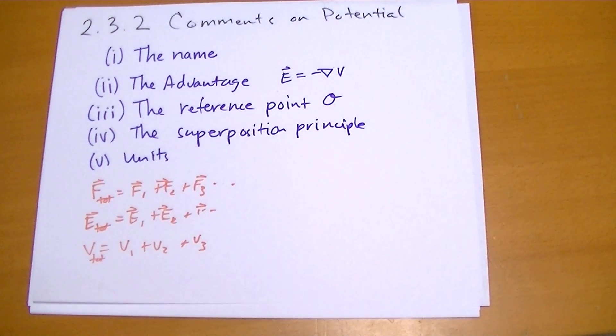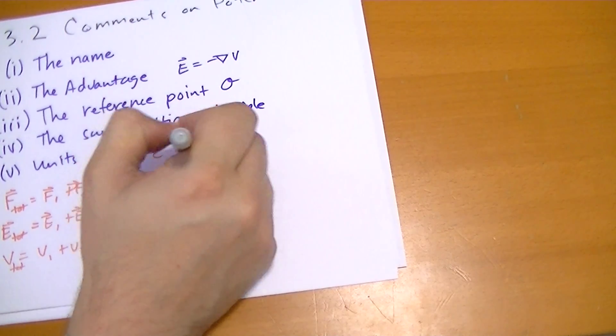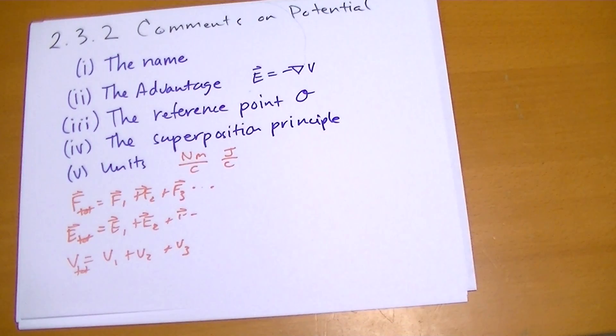Finally, I'll cover the units of potential. Unit potential is measured in newton meters per coulomb or joules per coulomb. Newton meters is a thing of work, so it's called a volt.